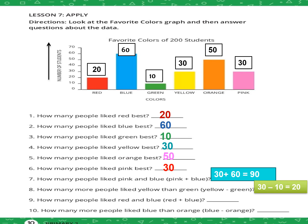How many more people like yellow than green? The keyword "how many more than" is the keyword of subtraction. Yellow is 30, green is 10. Write the biggest number first: 30 minus 10 equals 20. How many people like red and blue? Red is 20 plus blue is 60 equals 80. How many more people like blue than orange? Blue is 60, orange is 50. 60 minus 50 equals 10.